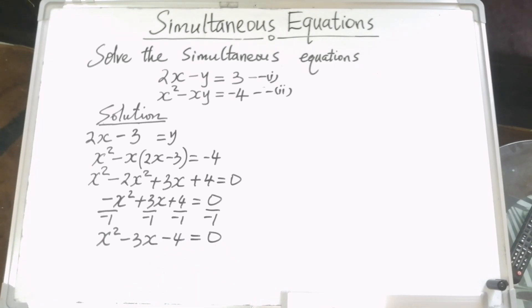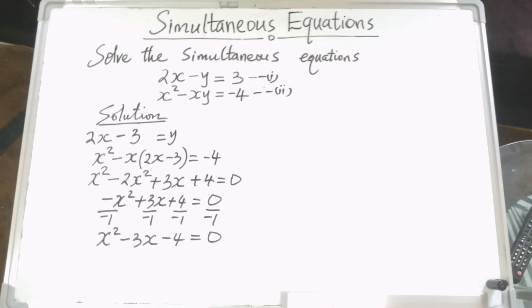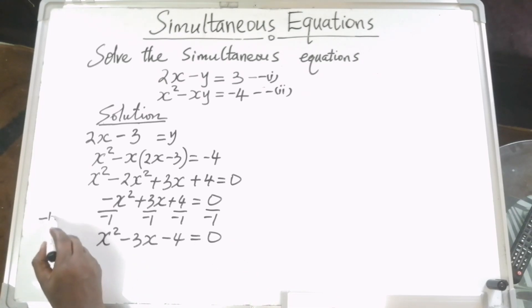That becomes our quadratic equation that we need to solve using a suitable method. We can use the method of factorization. We need to find two numbers whose sum is minus 3 and whose product is minus 4. Those two numbers are negative 4 and 1.